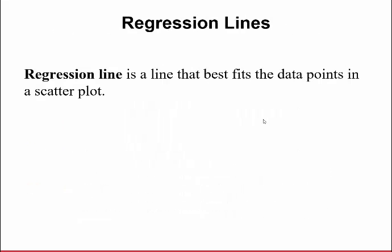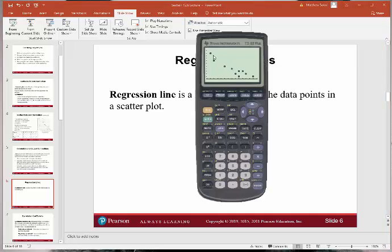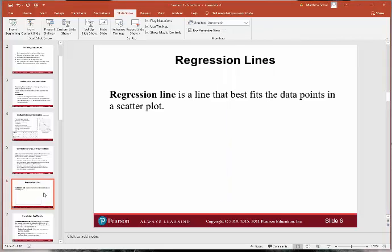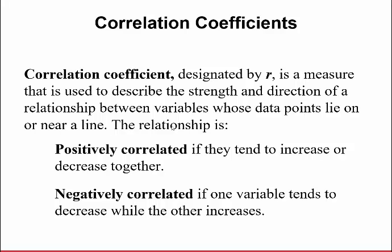Now we want to talk about what's called a regression line — a line that best fits the data. If you look at the trend in the scatterplot, we want to fit a line that goes through it and models the data well. The correlation coefficient is defined by the letter R — lowercase r. This is a measure used to describe the strength and direction of a relationship between variables. The relationship is positively correlated if the variables tend to increase or decrease together, or negatively correlated if one variable tends to decrease while the other increases — which is what we're seeing with years of education and prejudice score.